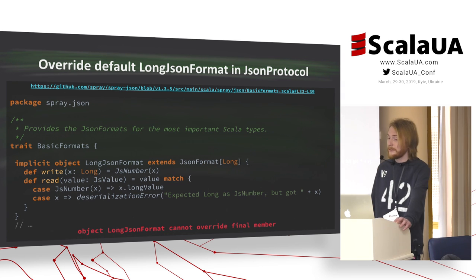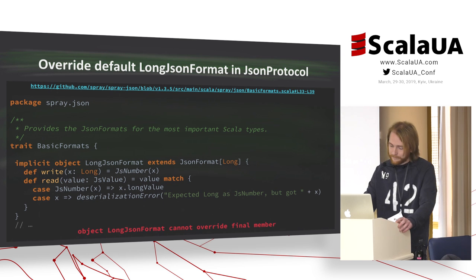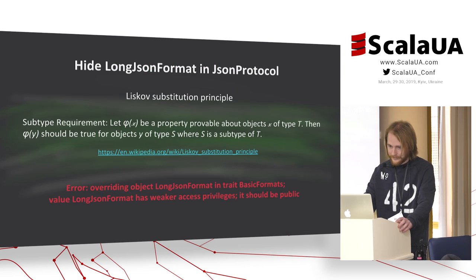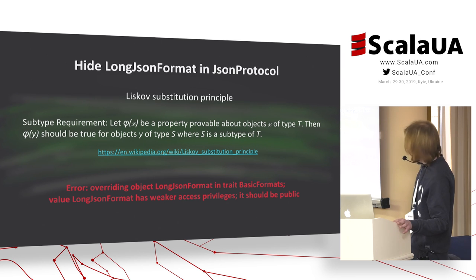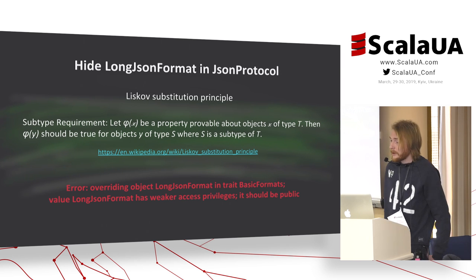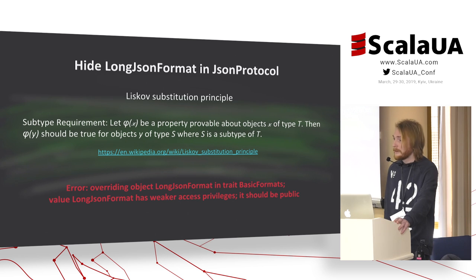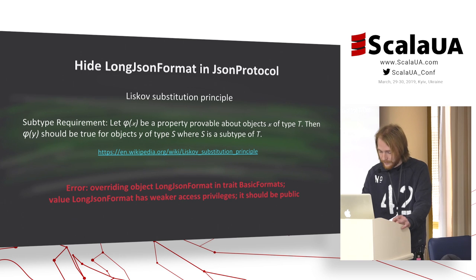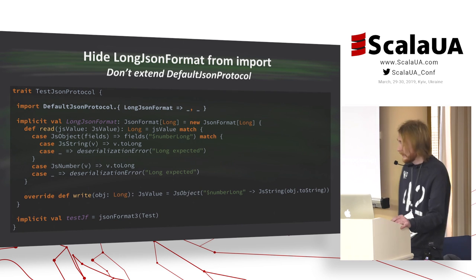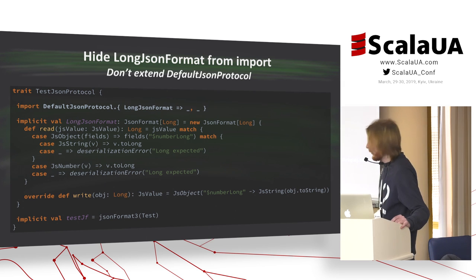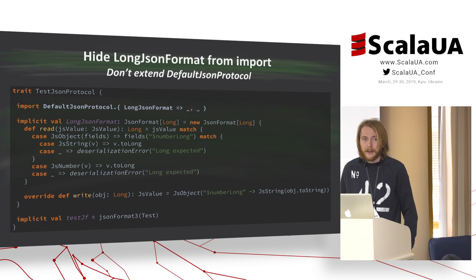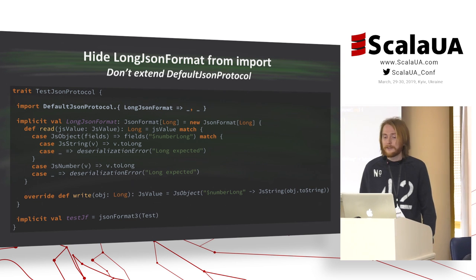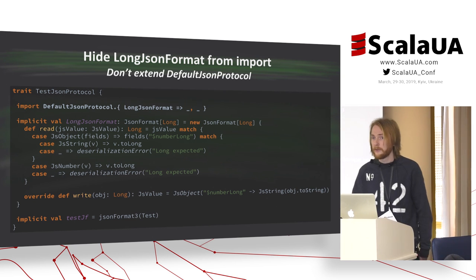MongoDB extended JSON presents long numbers as objects with a numberLong key. The long JSON format is defined as an object in the default JSON protocol, which makes it impossible to overwrite the serialization logic for this data type. At the same time, the Scala compiler follows the Liskov substitution principle and doesn't allow hiding this format in subclasses. Note that Scala does allow hiding imports. The current slide demonstrates how to hide the long JSON format from an import and define a new one.